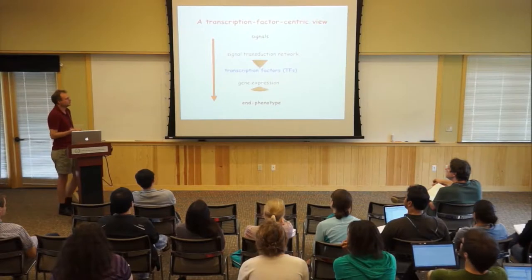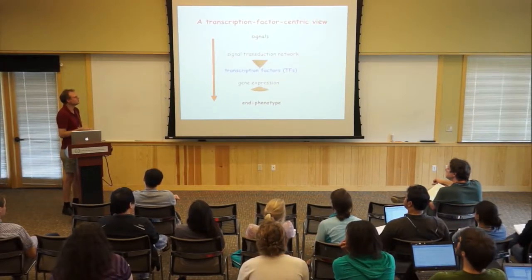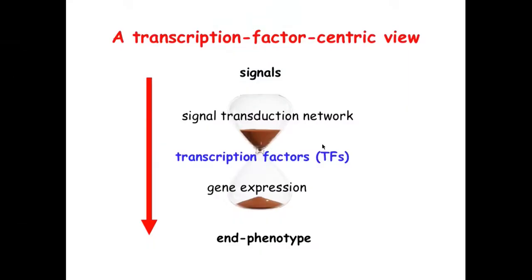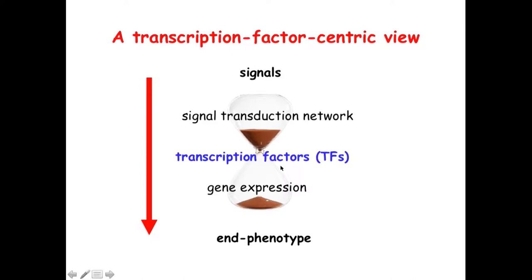In a lot of what we do in my lab, and the field as a whole is moving in this direction, we take a trans-factor-centric point of view, focusing on DNA binding. It's a very natural level to try to capture differences between cell types or cell states, because all the information about the environment that the cell receives, in order to reach gene expression level and phenotype, has to pass through this bottleneck of trans-factors. They're the middlemen. If you want to put numbers on things, this is a good level because these are the bottleneck variables that nicely separate upstream events from downstream events.